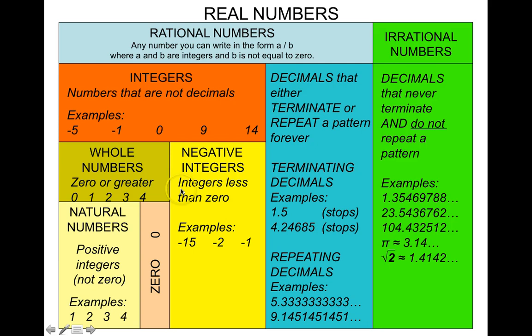The negative integers are integers less than 0. For example, negative 1, negative 2, negative 15. Notice the way this chart is designed — whole numbers and negative integers are both types of integers, as they are shown beneath the integer box.